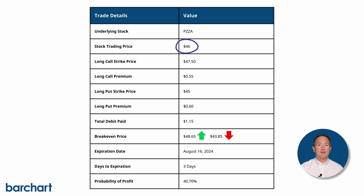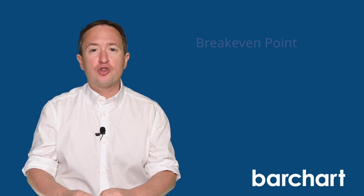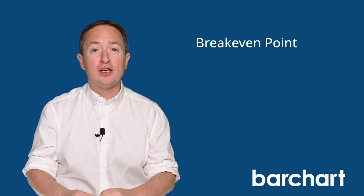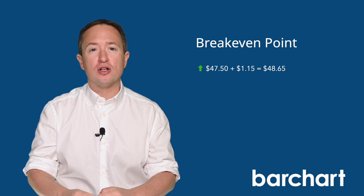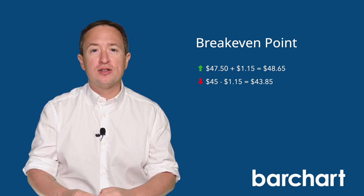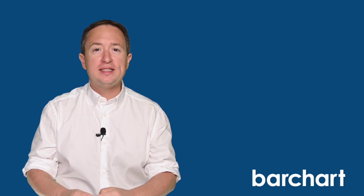Papa John's is trading at $46 at the time of the screen. It suggests buying a long call with a $47.50 strike price for $0.55 a share, and a long put with a $45 strike for $0.60. The total premium for the trade is $1.15, which will also be the maximum loss if things don't work out, and both options expire on August 16th. For strangles, it's important to know where your break-even prices lie to the upside and to the downside. To get the break-even price to the upside, simply add the total premium to the long call strike, and subtract the total premium from the long put strike to get the break-even on the downside. That gives $48.65 on the upside and $43.85 on the downside. This trade will only see a profit if Papa John's stock price moves beyond any of these price points before expiration.